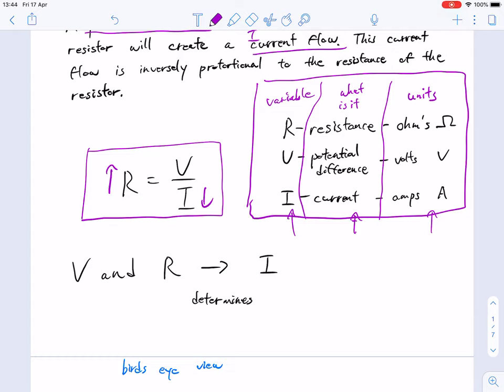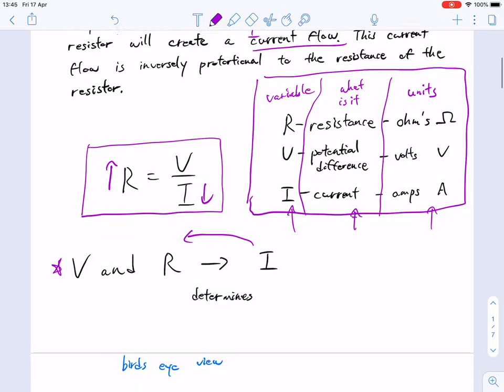One thing to really keep in mind here is that current is determined by voltage and resistance. Essentially, voltage and resistance are the main independent variables in our investigation, and they, in many ways, control the flow of current.